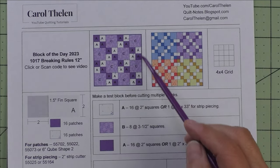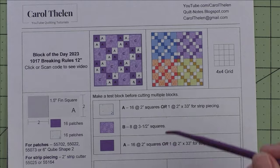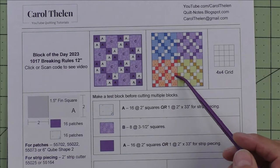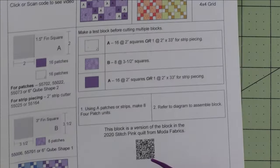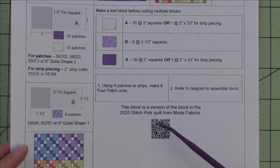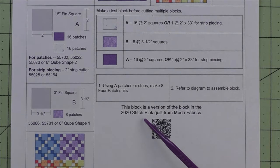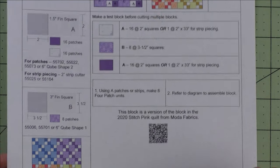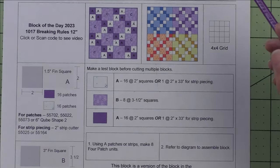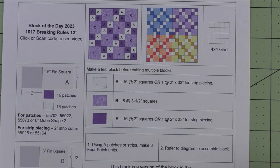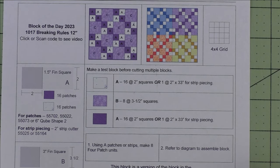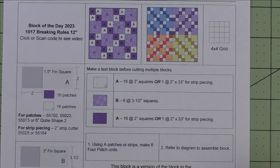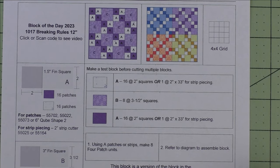And the same thing going down. Here are four blocks. This is another quilt block from the Stitch Pink 2020 quilt from Moda Fabrics. I did this quilt in 2020 when I had my quilt shop and I sold kits to it and made one of the quilts, and it was hanging in the retreat house.